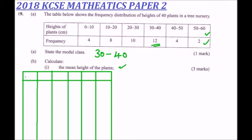The table has the following columns: the class, X which represents the midpoint, then frequency. We then multiply frequency by X (the midpoint) to get FX, and we will also square X to get X². This is because later in the question we need to calculate the variance and the standard deviation.